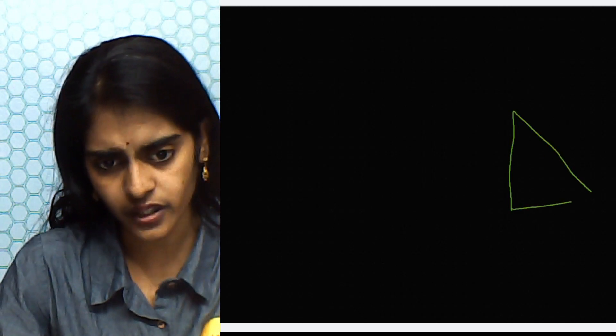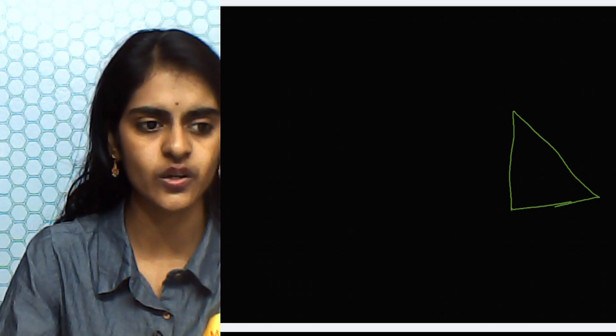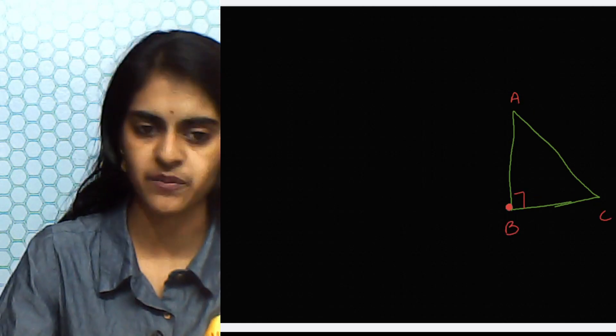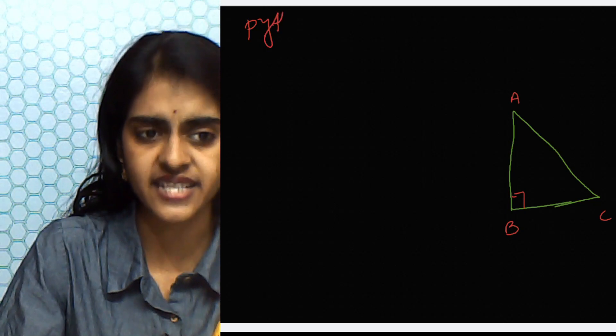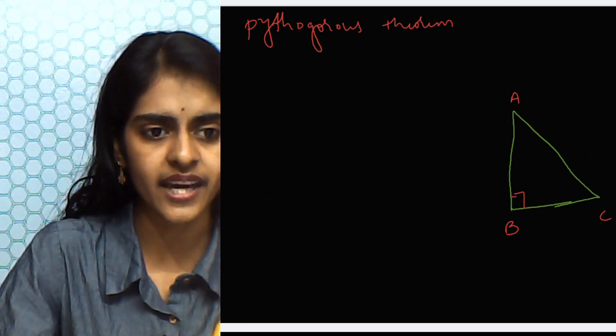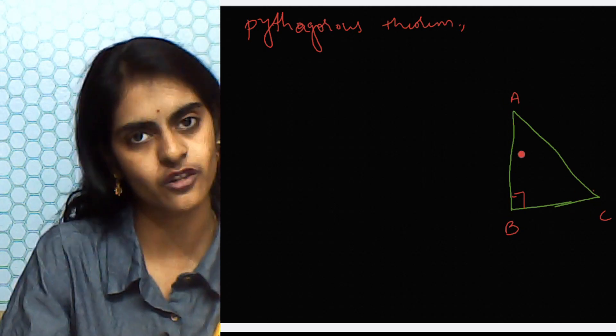Now let us try to derive the trigonometric identities. Trigonometry always deals with a right angle triangle, so let us take a right angle triangle. Let me name this triangle A, B, C with a right angle at B. We know from Pythagoras theorem that the square of the hypotenuse is equal to the sum of the squares of the other two sides. So AC² = AB² + BC².